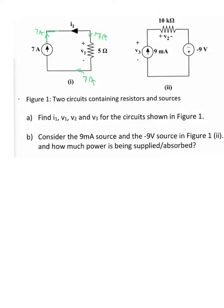We've selected I1 to be randomly indicated flowing in this direction, so you can see I1 is defined as flowing in the opposite direction to the seven amp source. We can simply say that I1 is equal to minus seven amps. Then using the current from the ideal current source, we know that V1 by Ohm's law is equal to 7 amps times 5 ohms, so it's equal to 35 volts.